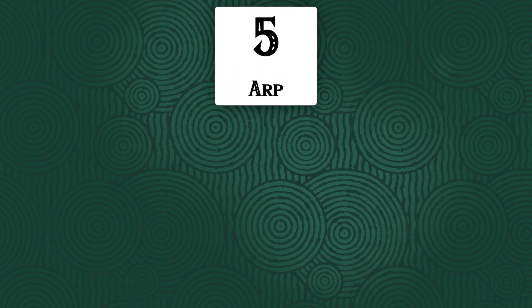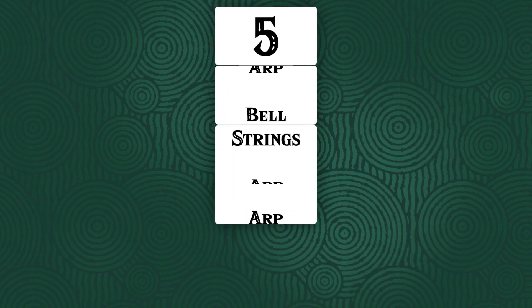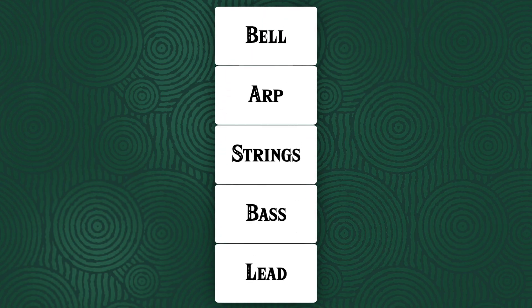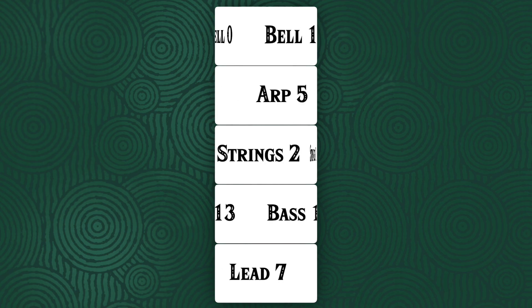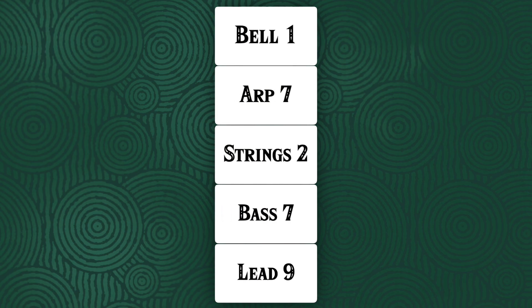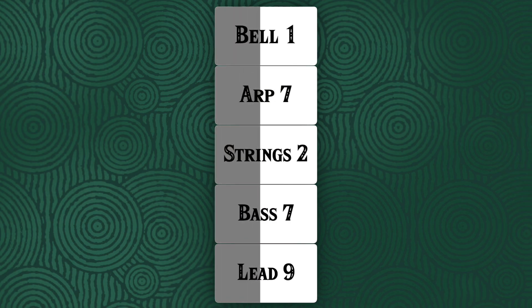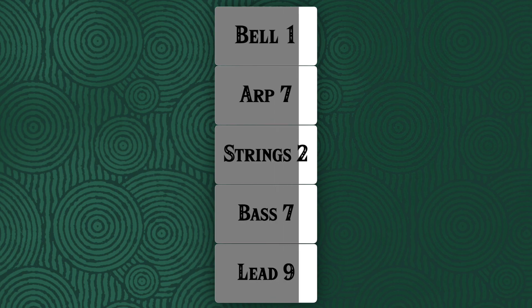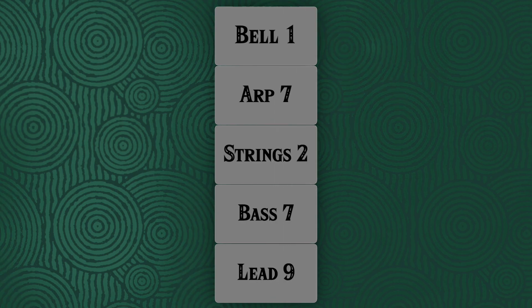The game has been programmed to first randomly choose the amount of layers to be played, then choose which layers will be played, and then which variations of those layers will be played. Every time a combination of these instrument layers and variations has finished playing, it repeats the same steps.